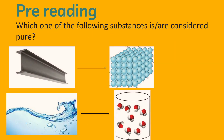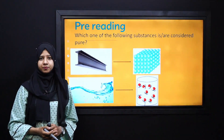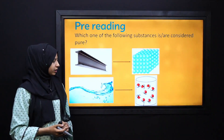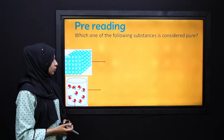Now let's pursue this knowledge further. Which one of the following substances do you consider as pure? The first one is the iron bar and the second one is water. From these, which one would be a pure substance?